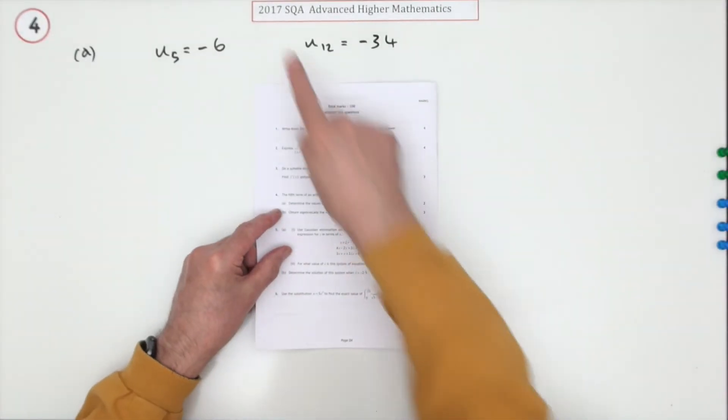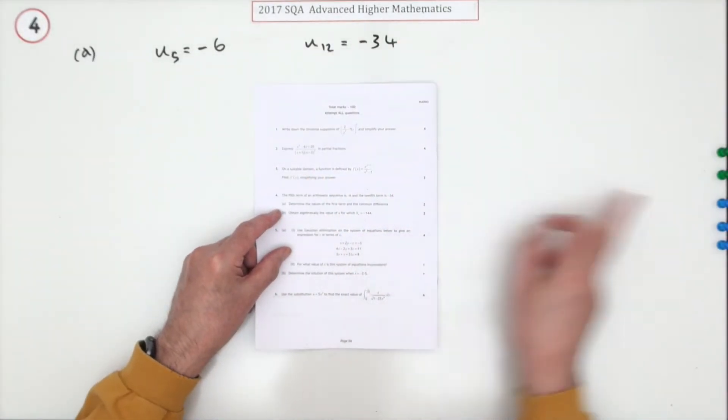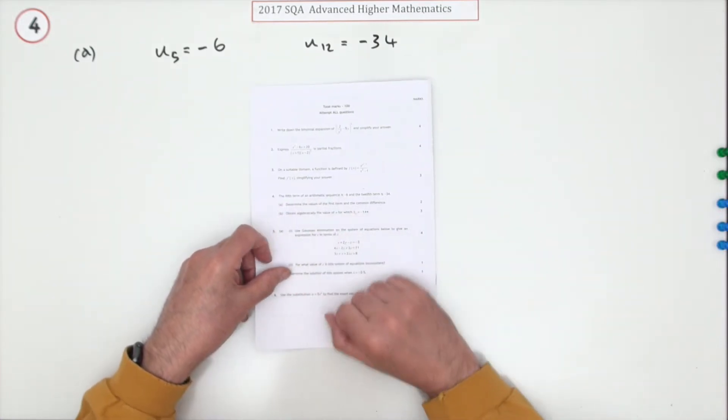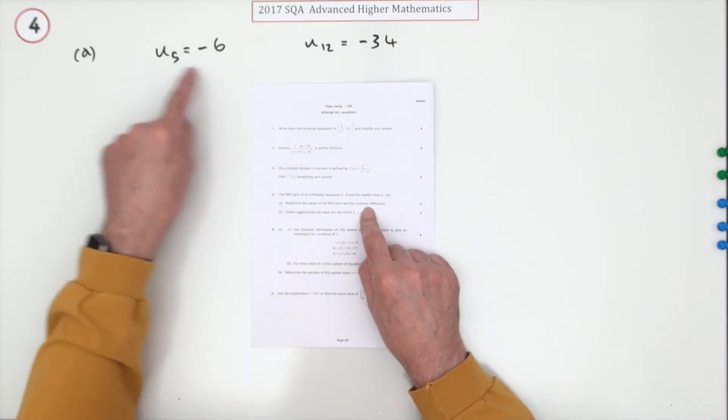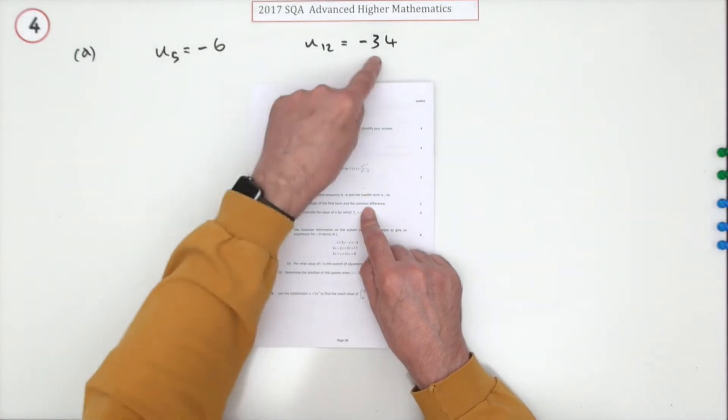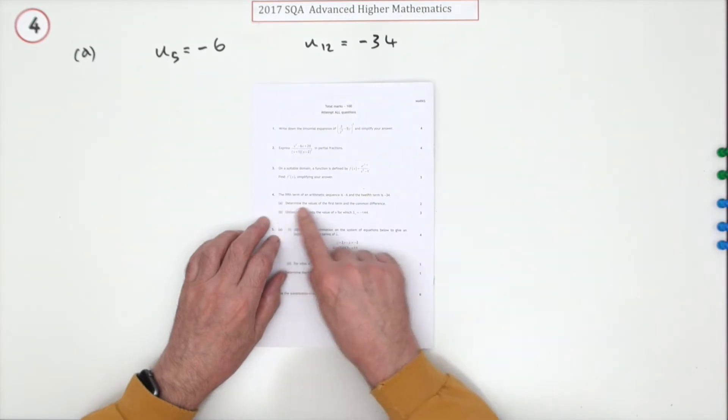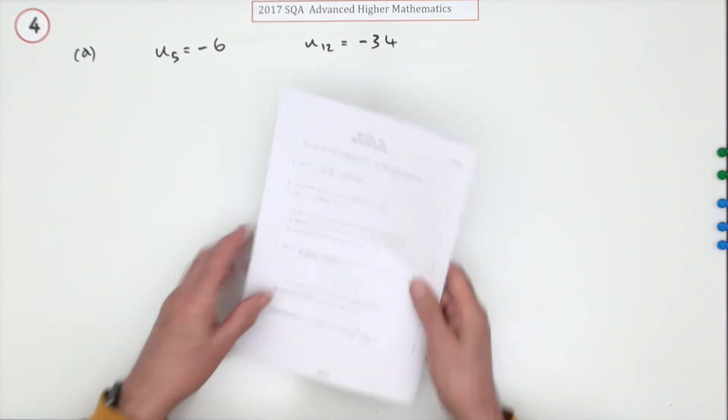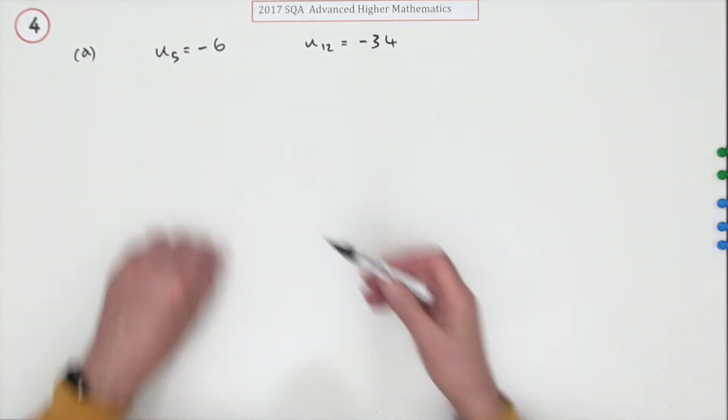Number four from the 2017 Advanced Higher Maths, up to five marks this time. Arithmetic sequence: to begin with, just for two marks, it gives you the fifth term negative six and the twelfth term negative 34, and it says determine the values of the first term and the common difference.